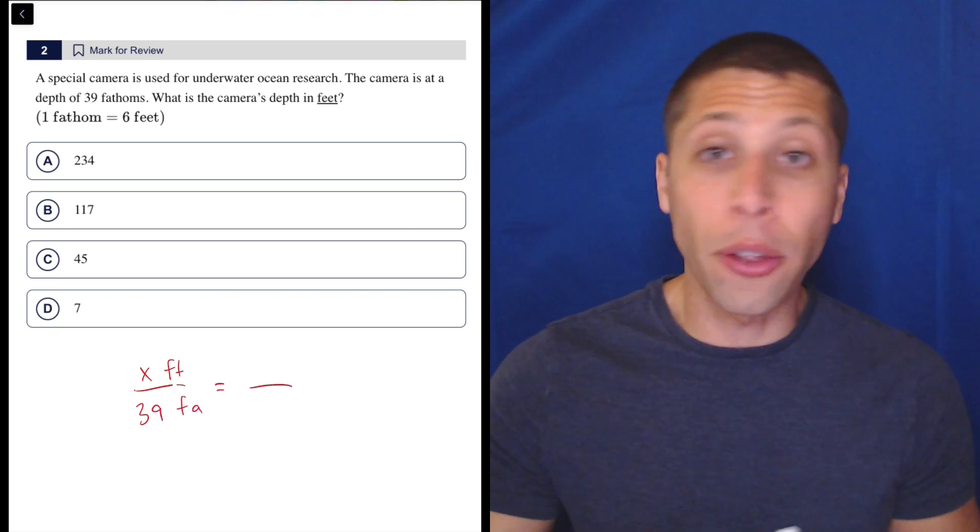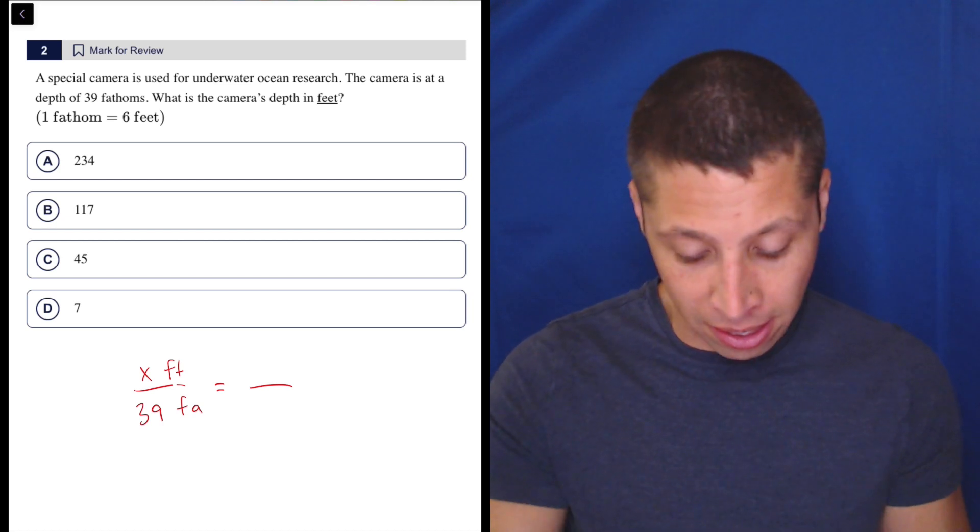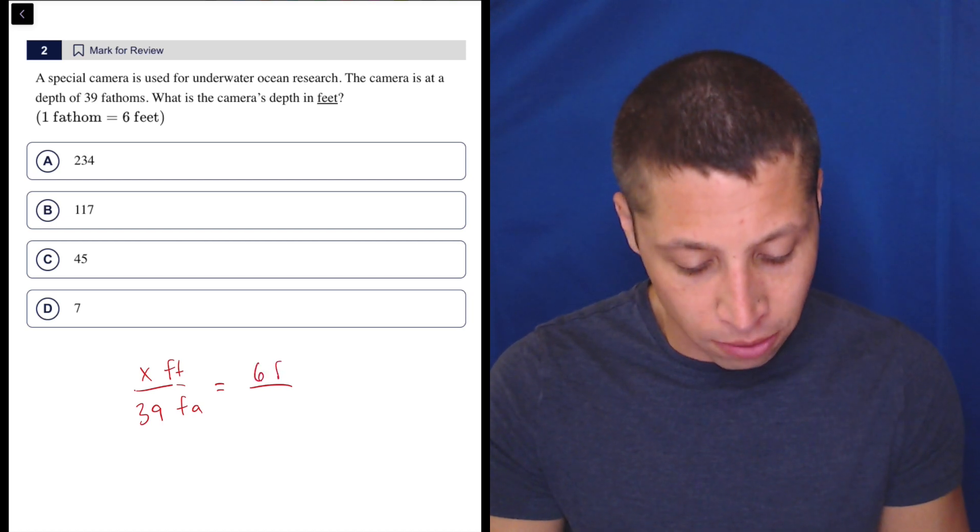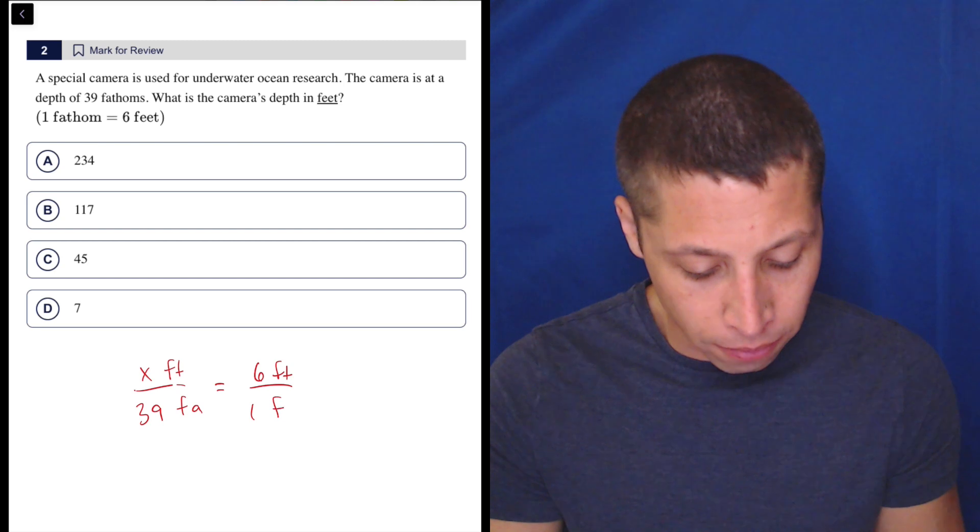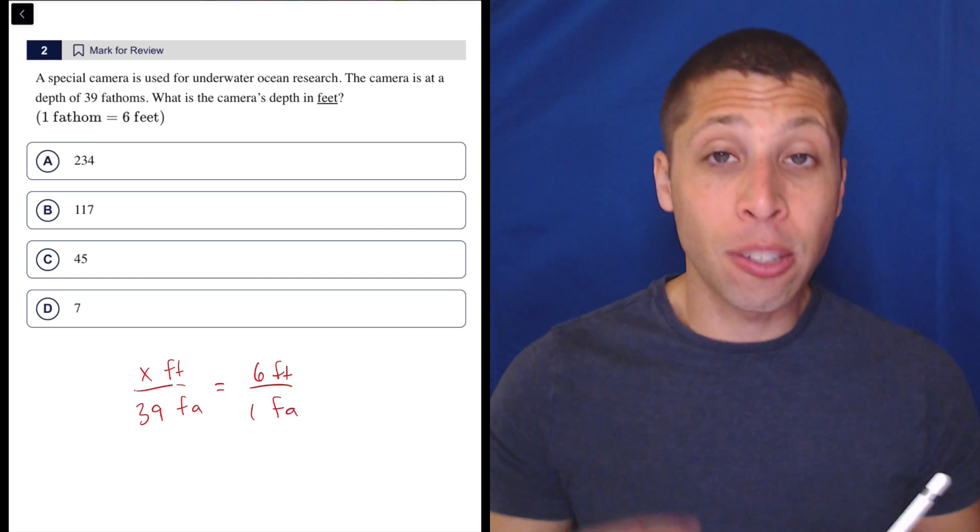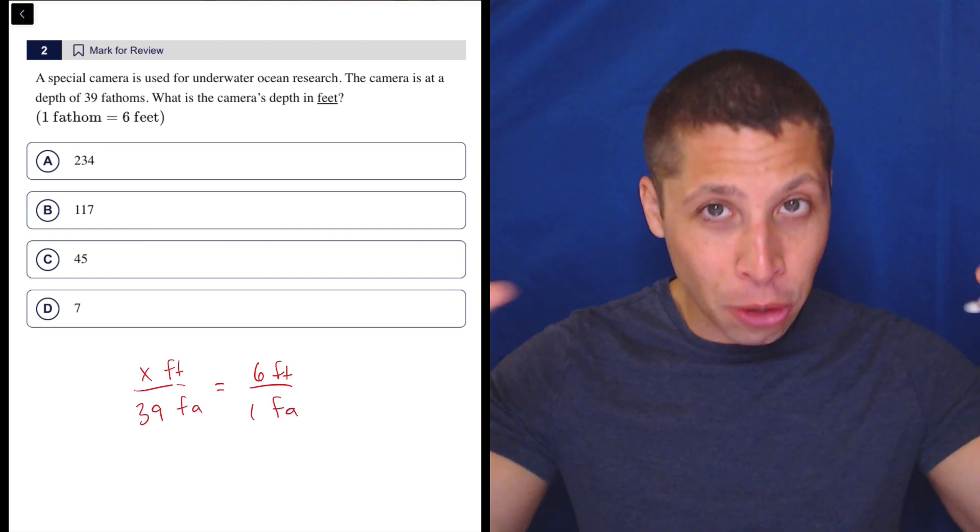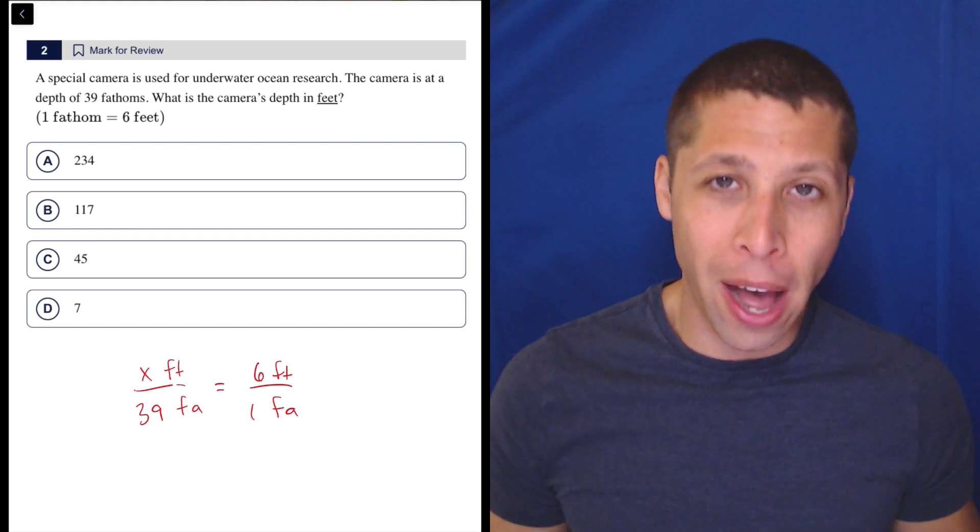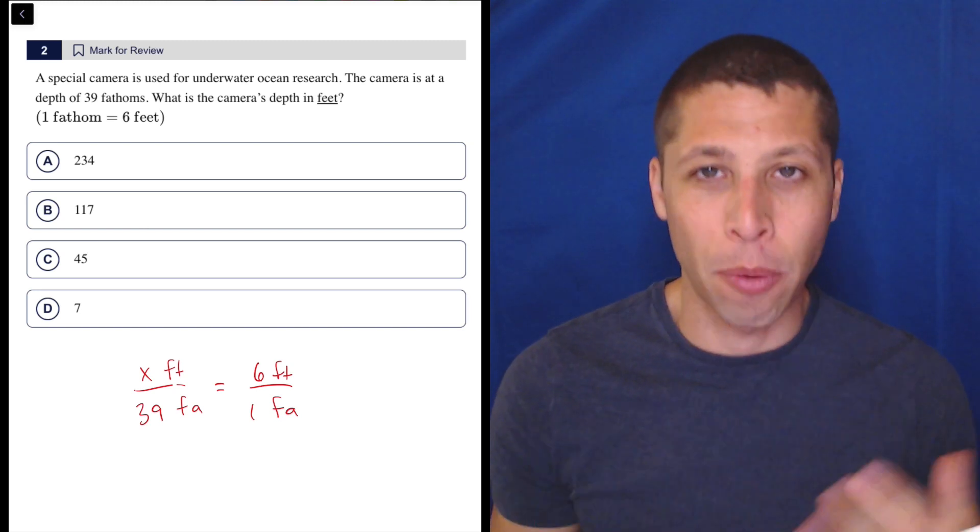And then I would use another fraction to kind of set these things up so that they're equal, right? So six feet over one fathom, right? So the key is when you do this, the unit on the top should be the top of both fractions. The unit on the bottom should be the bottom of both fractions. And that's how we know we did it right.